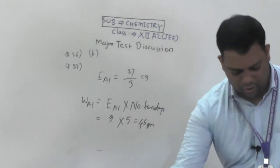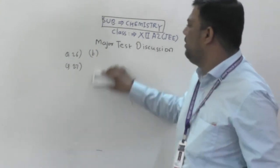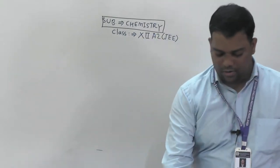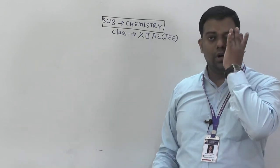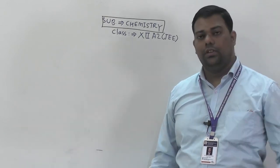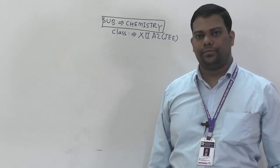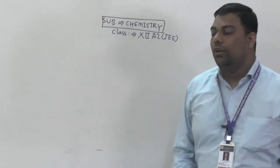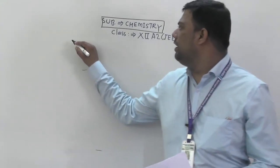Option for question 27 is small C. This electrochemistry topic is very important for both theoretical and numerical aspects — including the Nernst equation, primary batteries, secondary batteries, and fuel cells.